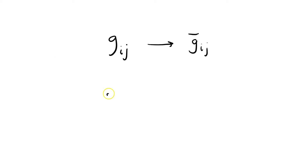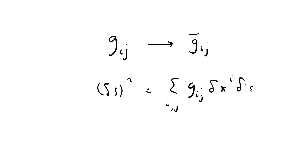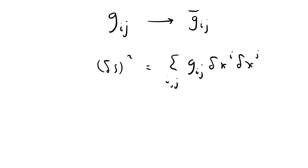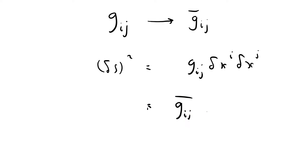The definition of it is: ds² equals sigma over i and j of Gij δxⁱ δxʲ. But in the barred coordinate system, we've got Ḡij δx̄ⁱ δx̄ʲ.